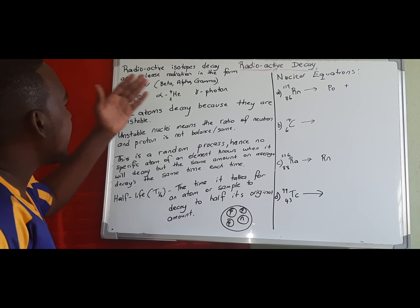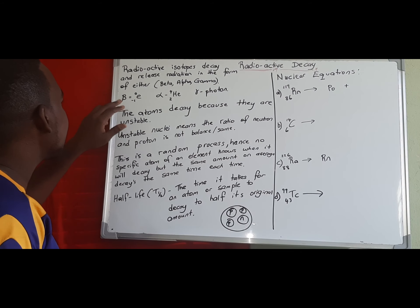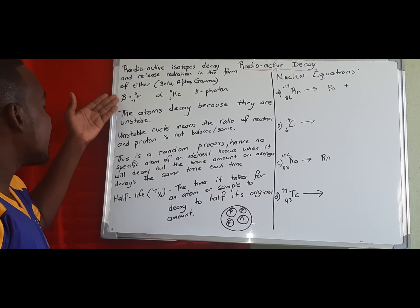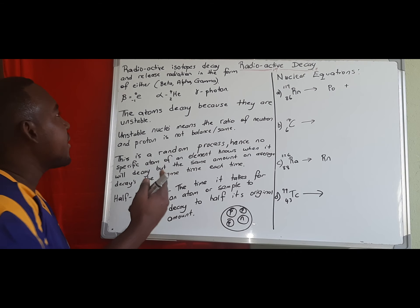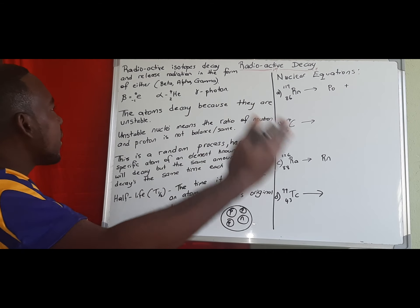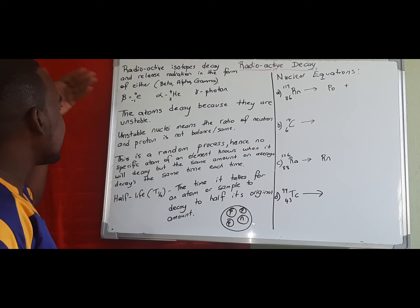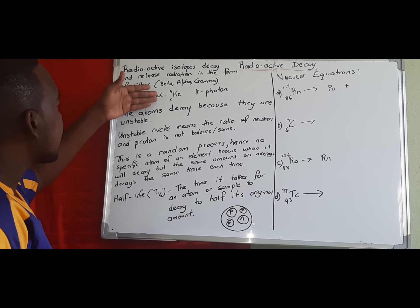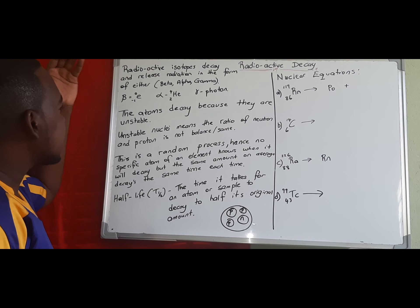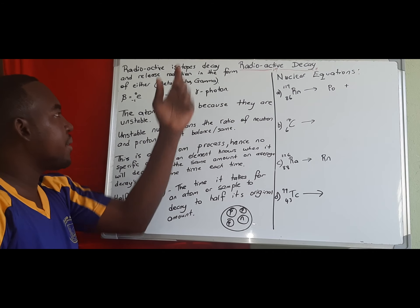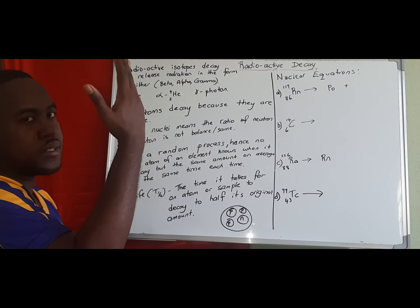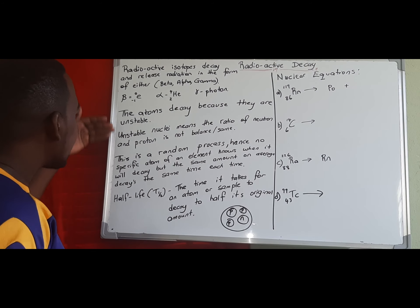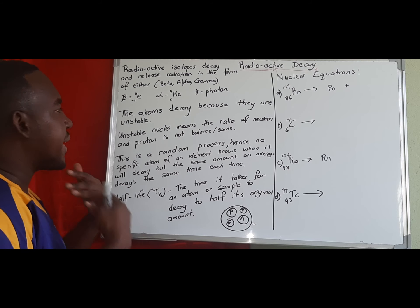Please note the symbols: beta looks like a normal 'b' but it's from the Greek alphabet. Alpha has its own symbol, and gamma looks like an alpha but pointing upward. Those are the types of radiation we have.